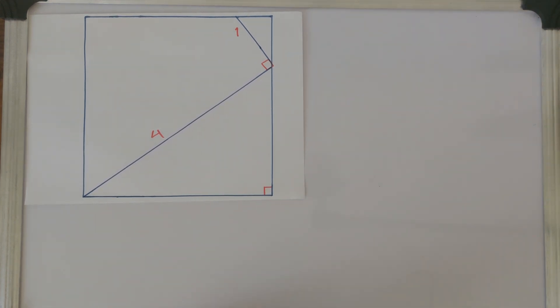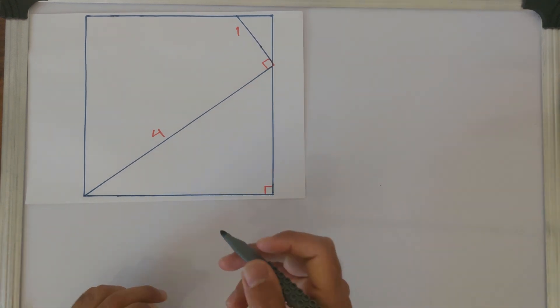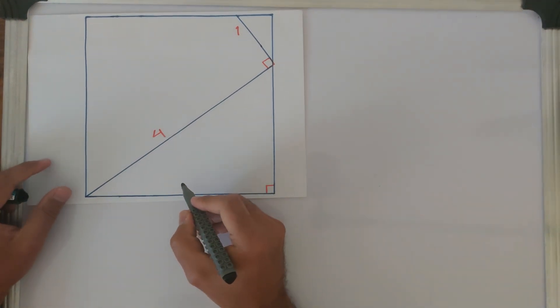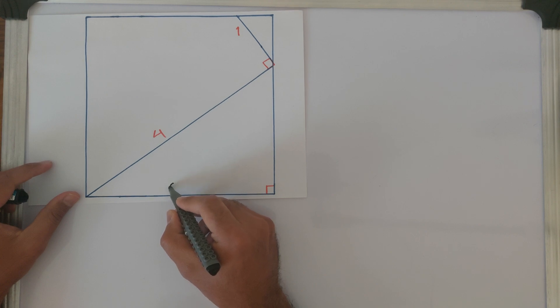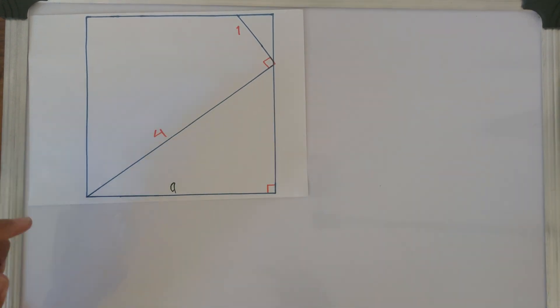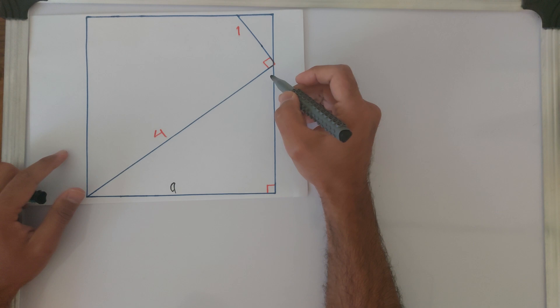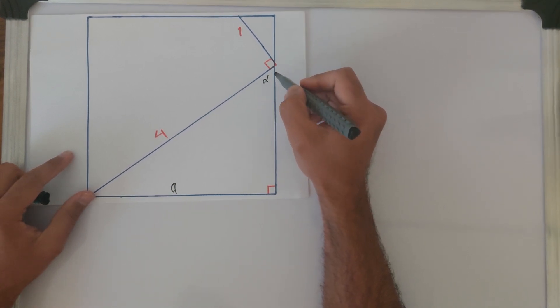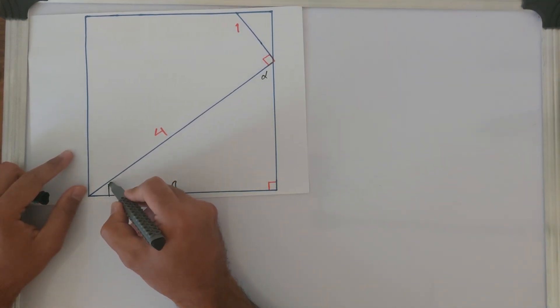Let's start. For better calculating, let's name the side of this square as a. Let's name this angle as alpha and let's name this angle as